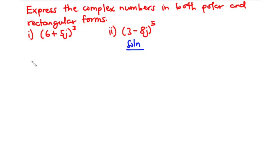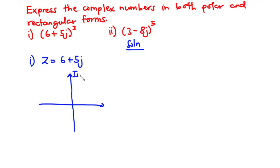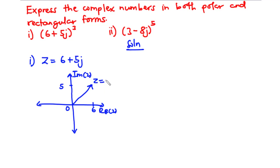Let's solve for i. For i, we say z equals 6 plus 5j. This complex number is in the rectangular form; we need to convert to polar form. We are going to draw the Argand diagram. We have the imaginary axis and the real axis. The x component is 6 and the y component is 5, so our complex number appears in the first quadrant. This is r, and theta is the angle formed between r and the positive x axis.